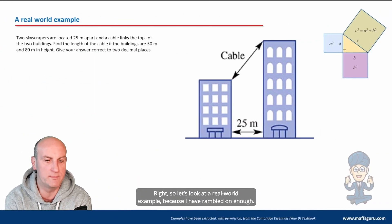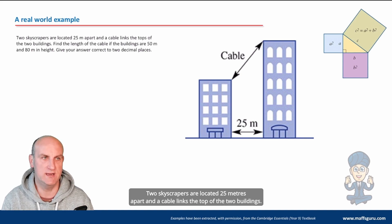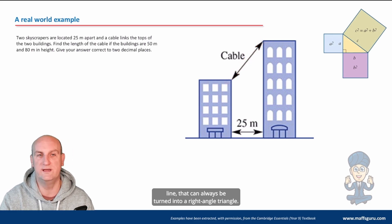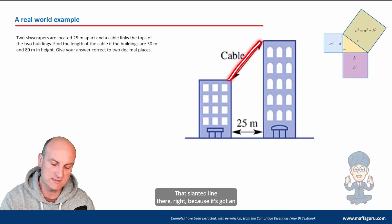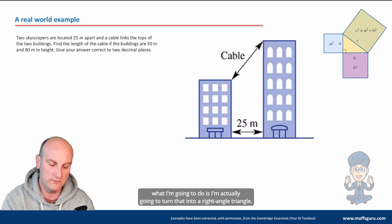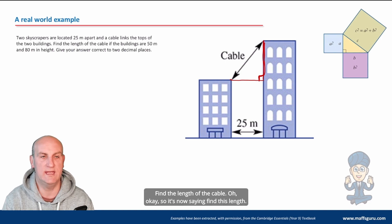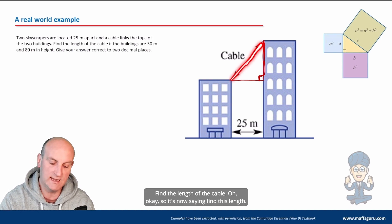So let's look at a real world example because I have rambled on enough. Two skyscrapers are located 25 meters apart and a cable links the top of the two buildings. Now what I say to my students is wherever you see a slanted line, that can always be turned into a right angle triangle. What I'm going to do is actually turn that into a right angle triangle. There we go. There is my right angle triangle.